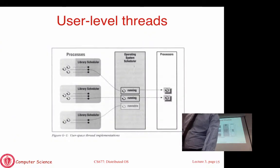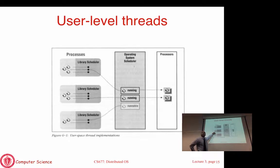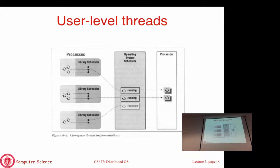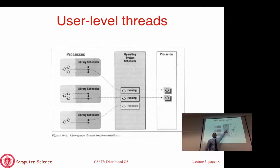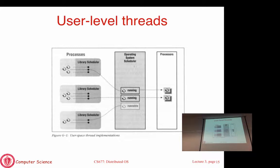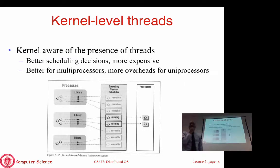A diagram shows threads within a process managed by a library scheduler. From the OS's perspective, this is a single-threaded process — the presence of threads is invisible to the OS. Each process maps to a core, and then the library scheduler picks which thread actually runs within that process.